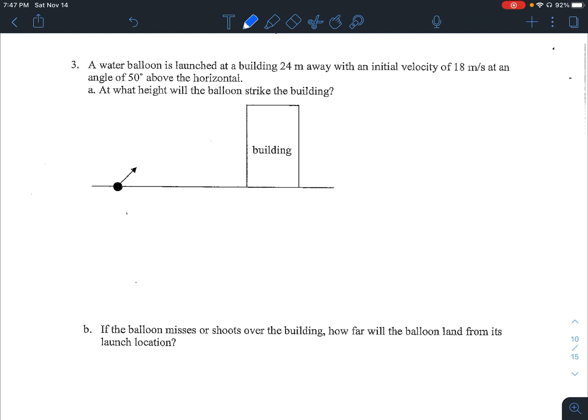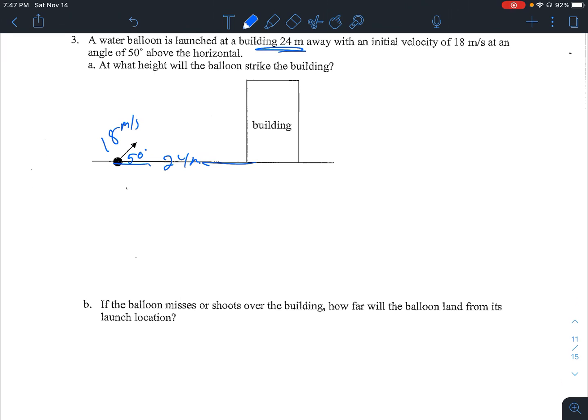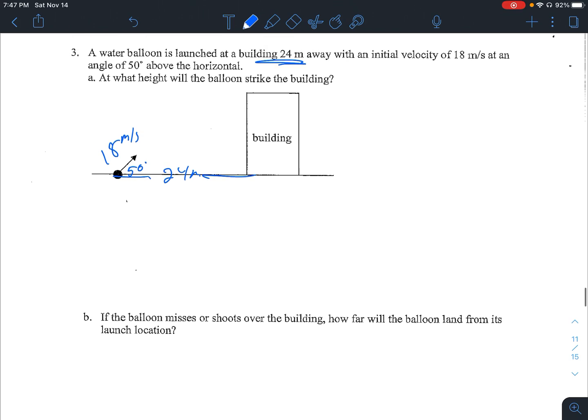All right, so we have our building, our water balloon, and we have our horizontal distance. This is 24 meters. It's shot at 18 meters per second. So the little hint is it's not in the X or Y, so we will have to break that up into components. And at what height will the balloon strike the building? It's a little bit different of a problem.